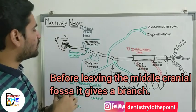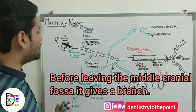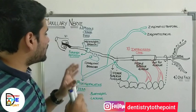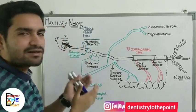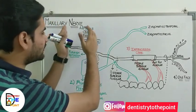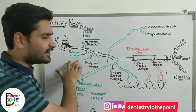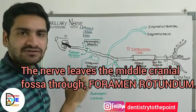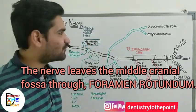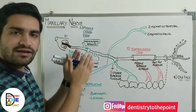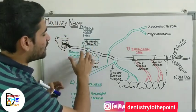Before exiting the middle cranial fossa, the maxillary nerve gives a branch called the meningeal nerve, which supplies the meninges. This is the first branch of the maxillary nerve. To leave the middle cranial fossa, it passes through the foramen rotundum, exiting into the pterygopalatine fossa.